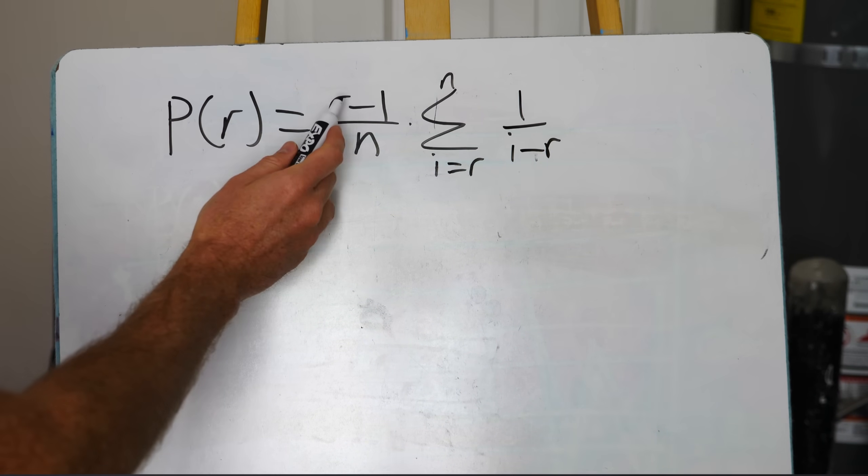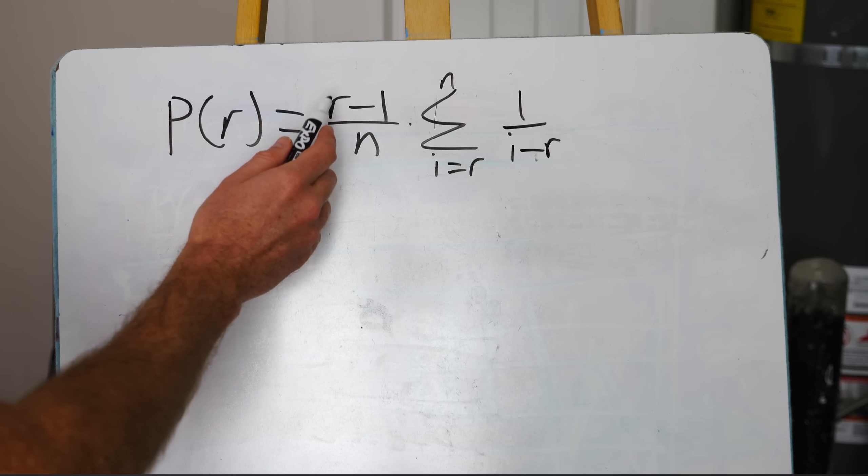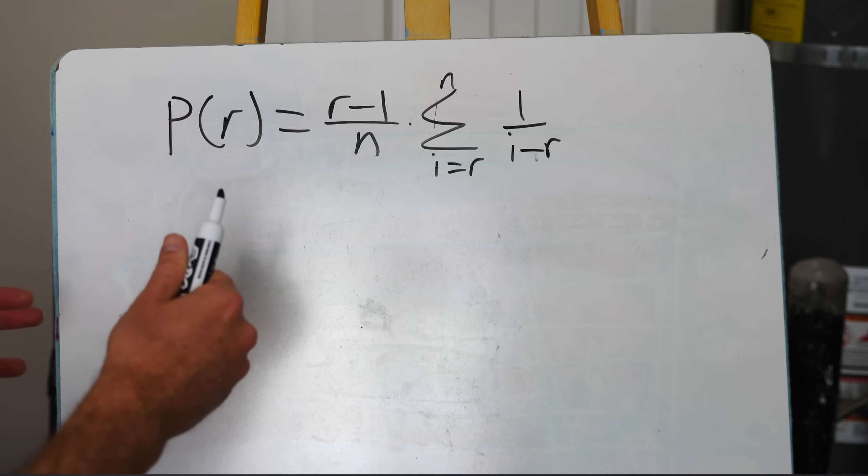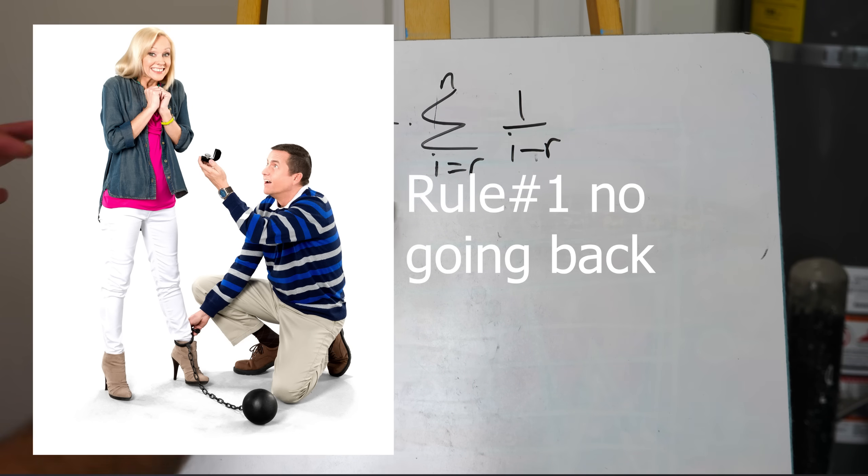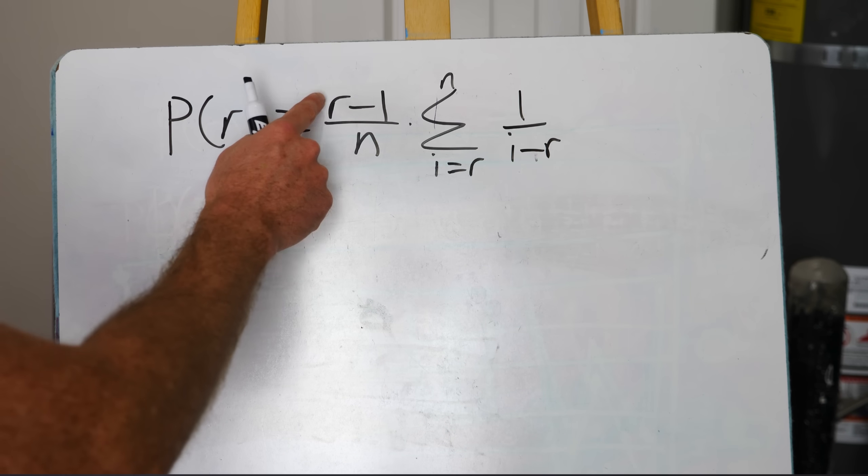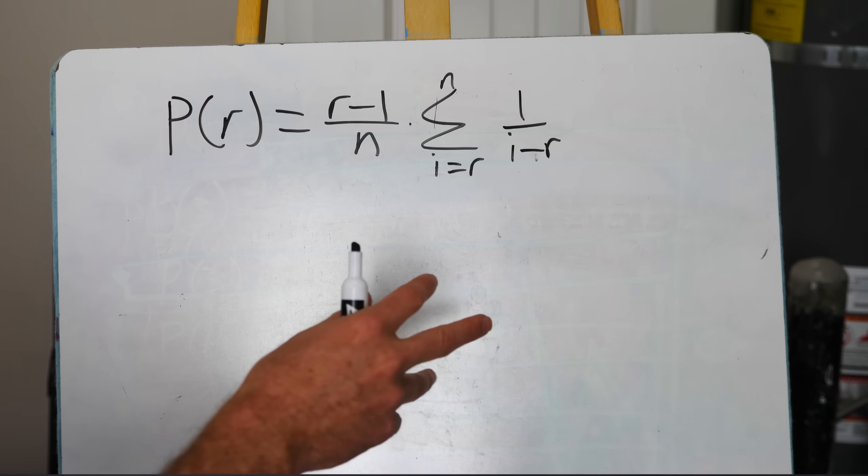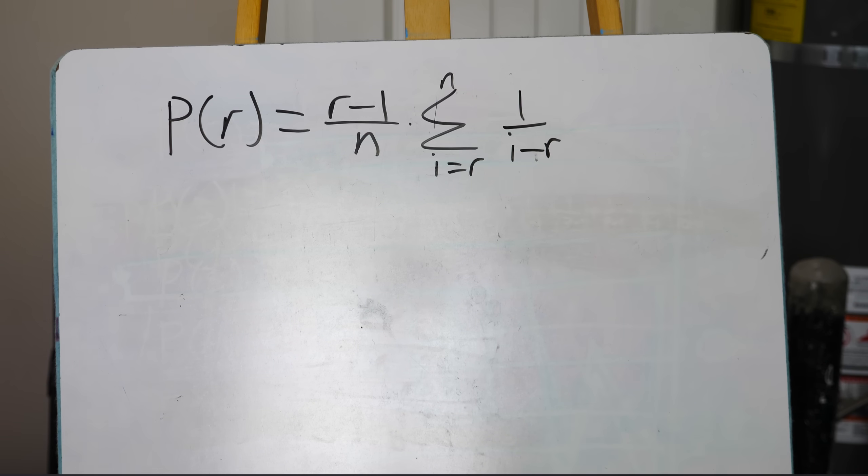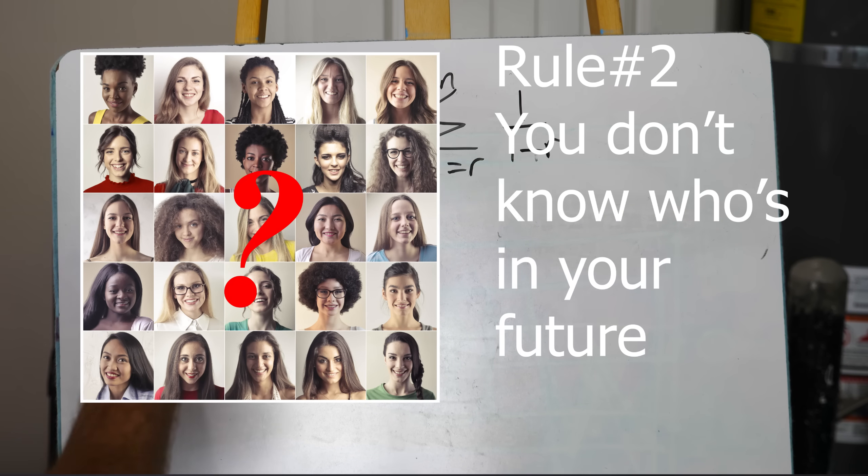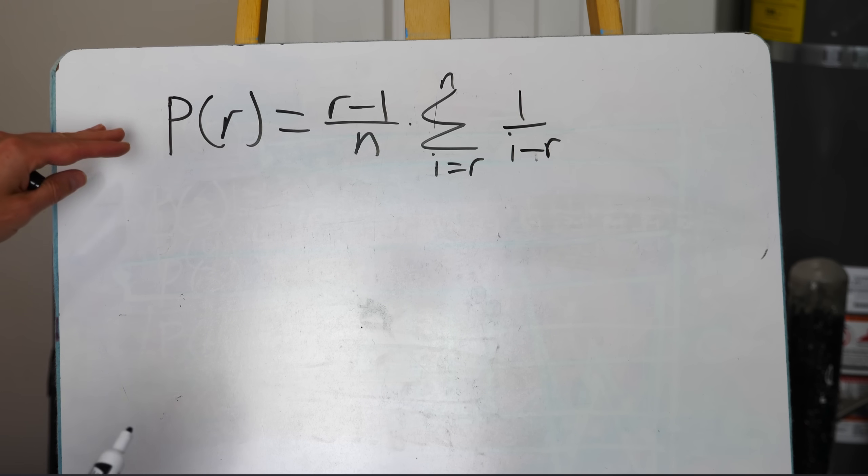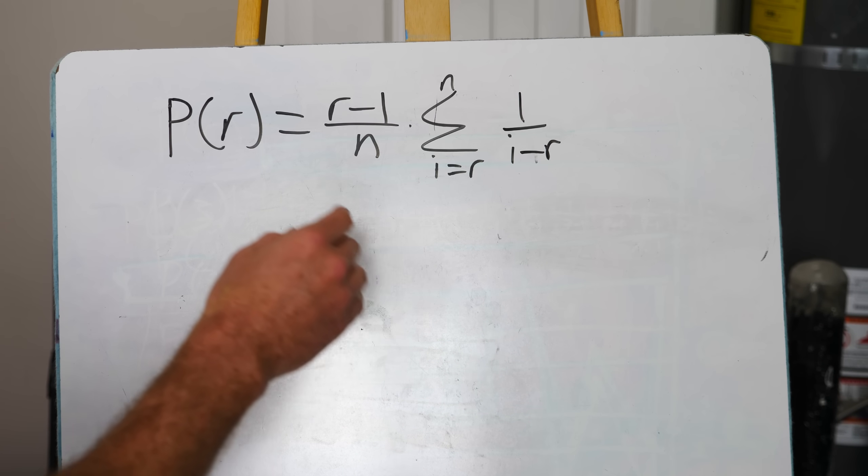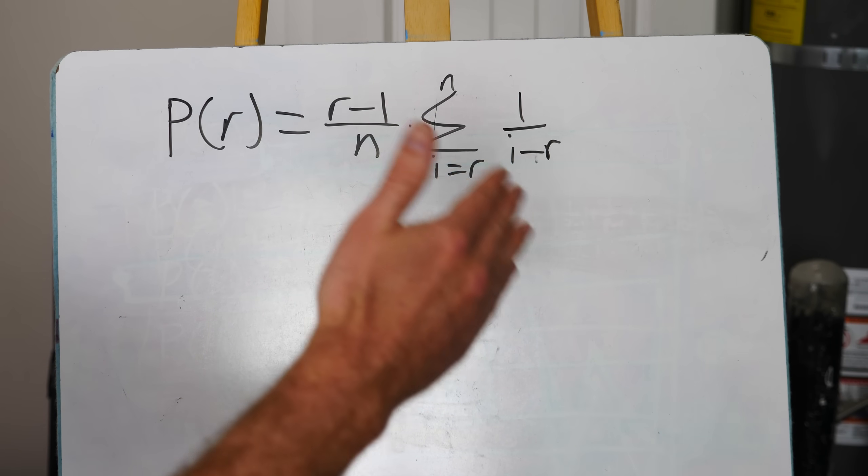Okay, so the rules of the Optimal Stopping Theory are kind of the same as the rules of dating. And it goes like this. Once you choose somebody, you can't go back and choose somebody else. And also once you pass somebody up, you can't go back and choose them. So once you've rejected someone, you can't go back and choose them again. So you only get one chance to select somebody and one chance to reject somebody.